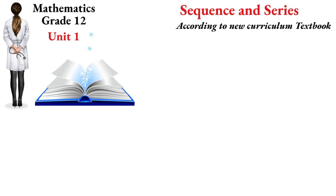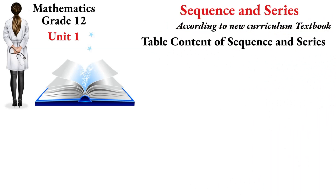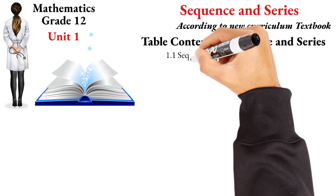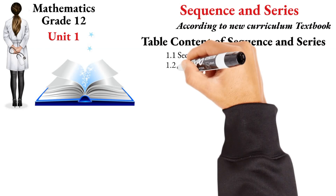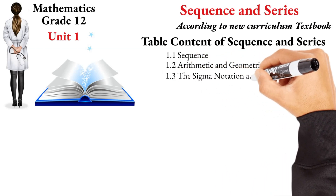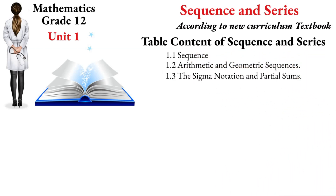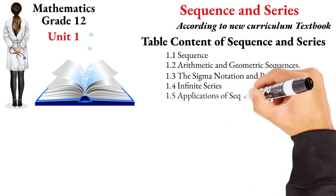In Unit 1, Sequence and Series, the first content is sequences in general. The definition is in general, and we will cover arithmetic and geometric sequences. The third section is Sigma Notation and Partial Sum. The fourth and final section is series, and fifth is applications of sequences and series.